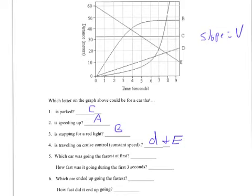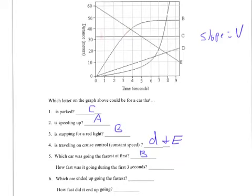Which car is going the fastest at first? That means I would look at the very beginning of the graph — which one of these has the steepest slope? And that one there is B. Then I asked how fast is it going in the first three seconds. We're going to go over three seconds and see how far did it go. It looks like it went about 33 meters. So 33 meters in three seconds — that would be 11 meters per second.